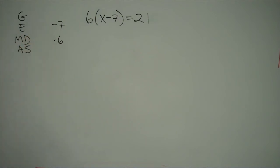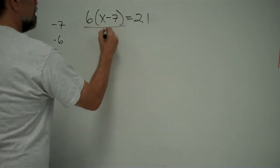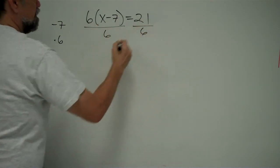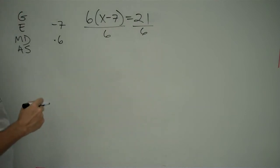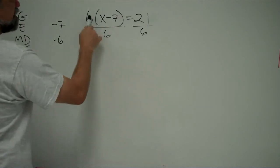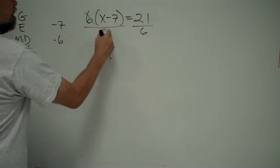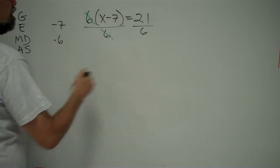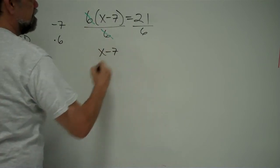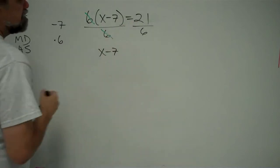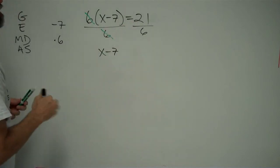And the way that you undo times 6 is you divide by 6. Alternatively, we could also multiply by 1 sixth, the reciprocal of 6. So, now that we have this, we see that we have 6 and 6. We can easily simplify that, and those simplify to 1 over 1. So, we're left with x minus 7 on our left.